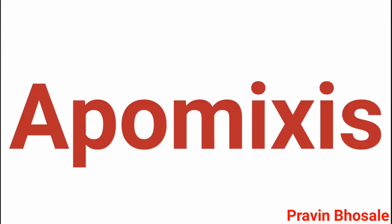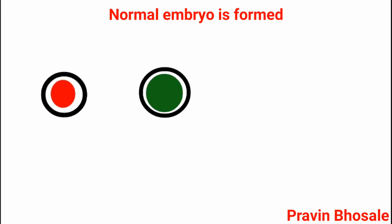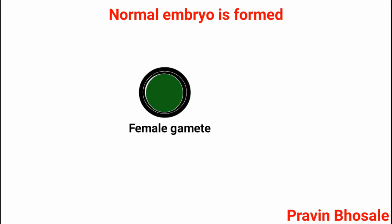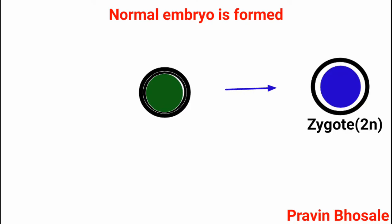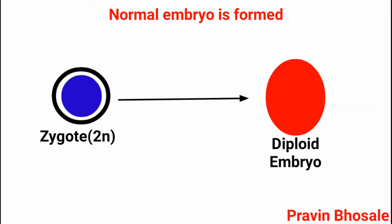Hello students, today I will explain apomixis. Before starting with apomixis, let's see how a normal embryo is formed. When a male gamete fuses with a female gamete, it forms a diploid zygote, and this diploid zygote further forms a diploid embryo.